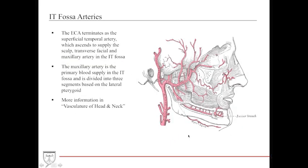The ECA terminates as the superficial temporal artery, which ascends to supply blood to the superficial scalp. It also gives off the maxillary artery in the infratemporal fossa. Based on the position relative to the lateral pterygoid muscle in the infratemporal fossa, the maxillary artery is divided into its three segments or divisions.